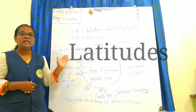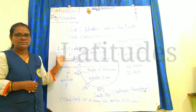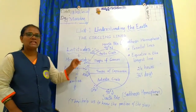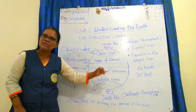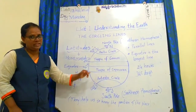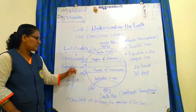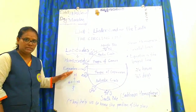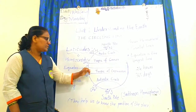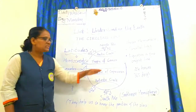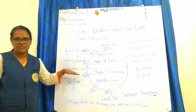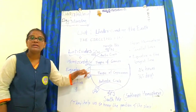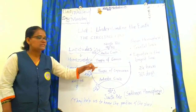Now we will start with the latitudes. Latitudes are the horizontal lines that run parallel to the equator. The measurement of degrees starts from the equator at 0. The equator is the longest latitude, as you can see here.